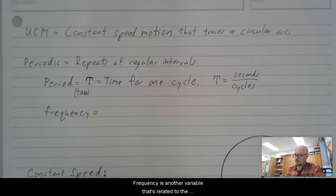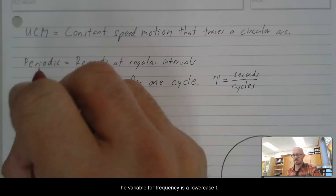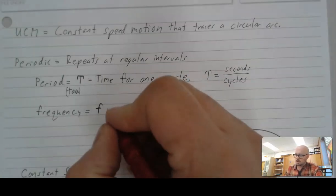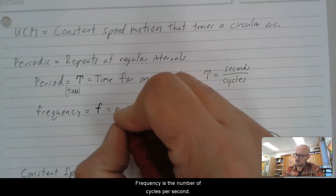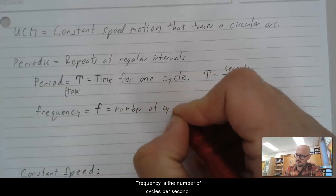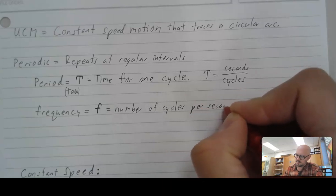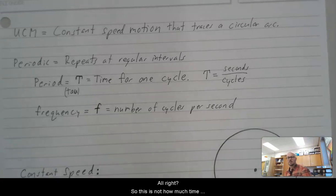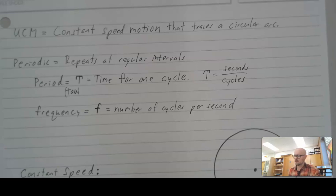Frequency is another variable that's related to the periodicity of circular motion. The variable for frequency is a lowercase f. And this is the inverse or reciprocal of period. Frequency is the number of cycles per second. So this is not how much time it takes for one cycle, but how many cycles can you fit into one second.